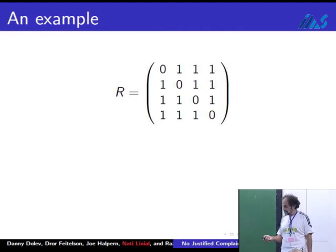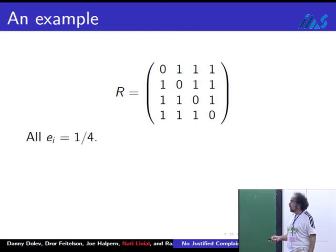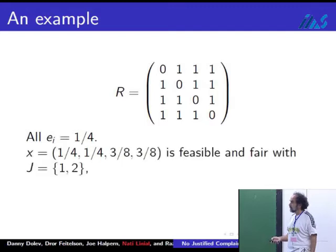Let's take a very simple example just to illustrate. Let's say this is the request matrix. Everyone is requesting one except that user i is requesting zero of resource i, and otherwise they're requesting one. All entitlements are a quarter. Here is one possibility: X is a quarter, a quarter, three-eighths, three-eighths.